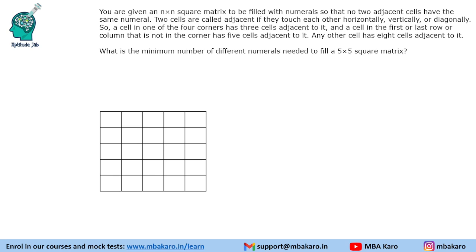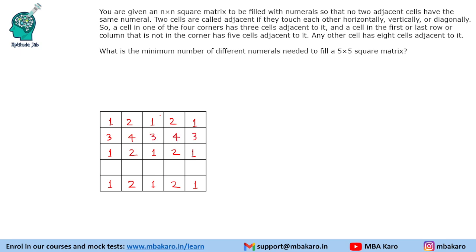What is the minimum number of different numerals needed to fill a 5×5 square matrix? The matrix has become larger. We follow the same approach as before — alternating 1s across the grid. Then we place 2s where possible, being careful about diagonal adjacency. For the remaining cells we use 3 and 4 alternating. So again in this case, we can fill with a minimum of 4 numbers.